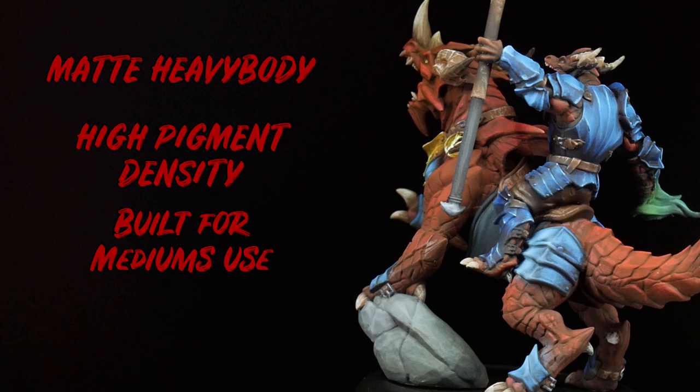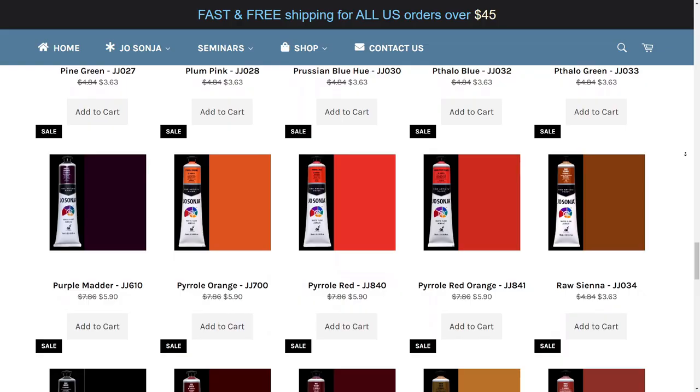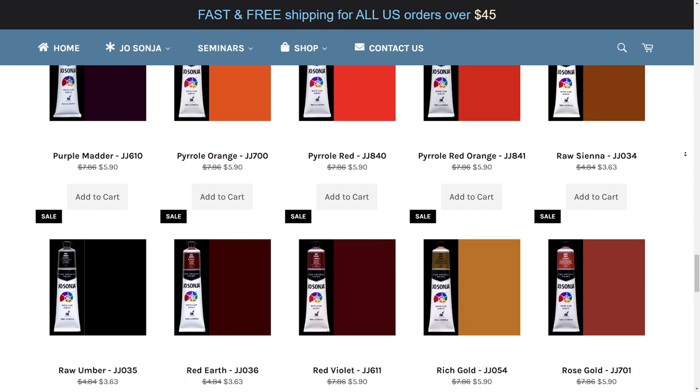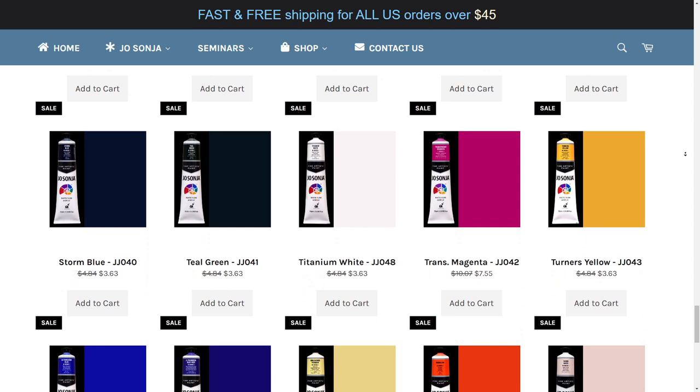Each tube has pigment information, which makes it very useful for mixing and knowing what's in your paint. Something that I briefly mentioned before was the cost. They do break the paints into price categories based on pigments used, but that doesn't mean they're expensive. Each series one paint is a little under $5 US for 74 milliliters of paint. That's equal to roughly four and a third bottles of a lot of miniatures brand paint bottles.